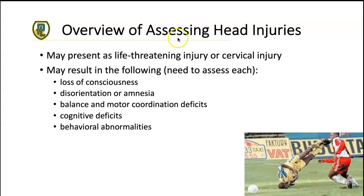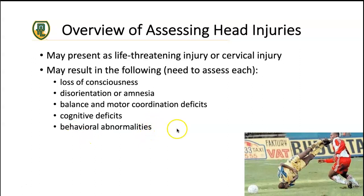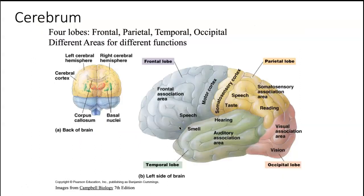When assessing head injuries, we must first rule out life-threatening injury or cervical spine injury — that warrants a call to 911, c-spining the patient and waiting for EMS. Signs of life-threatening or cervical spine injury include any loss of consciousness regardless of duration, disorientation or amnesia, balance or motor coordination deficits if the patient can stand, cognitive deficits, and behavioral abnormalities — most often increased aggression following some type of head or cervical spine injury.